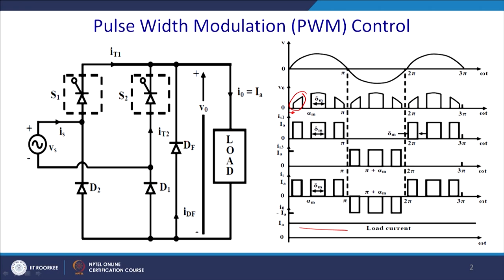IS1 is the current through the thyristor, and the upper waveform is the load voltage. With this chopping profile and a constant load current, the fundamental of the input current yields unity power factor. We can also apply selective harmonic elimination, since the dominant harmonics due to the square wave with odd symmetry are third-order harmonics.